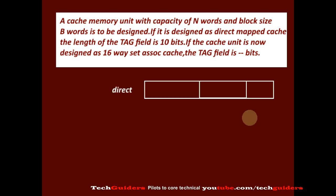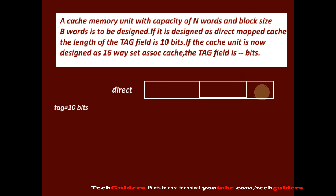Currently it is designed as a direct mapped cache. In direct mapped cache, the physical address can be divided into fields such as the word field, line index field, and the tag field. The tag field is already given as 10 bits. The size of the block is b words, hence the number of bits required for the word field is log b to the base 2.